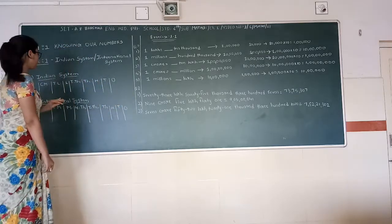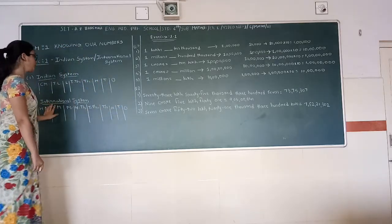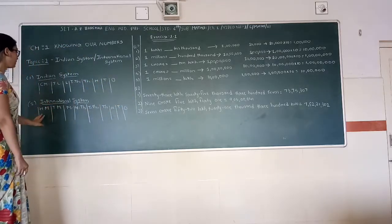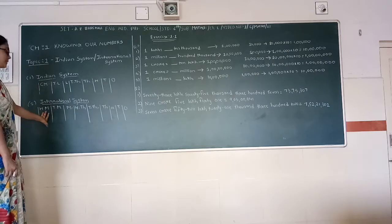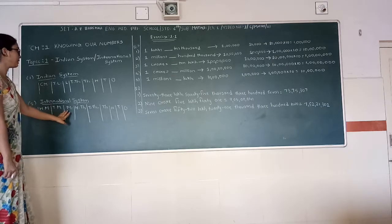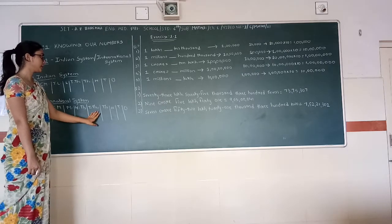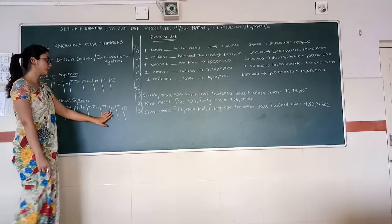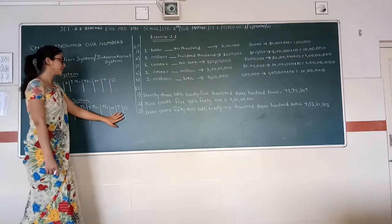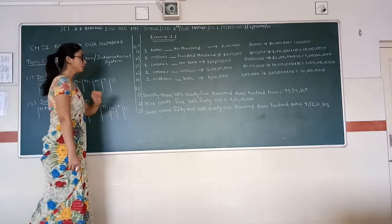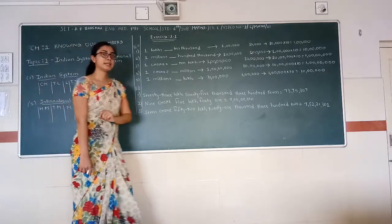While in the international system we divide numbers on the basis of hundred million, ten million, million, hundred thousand, ten thousand, thousand, hundred, tens and ones.